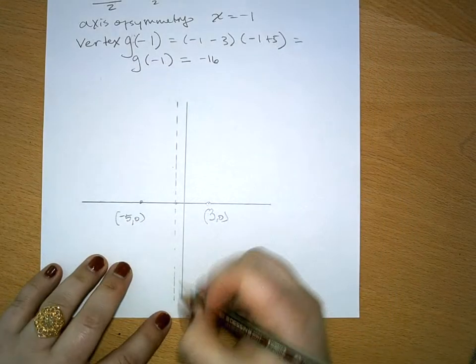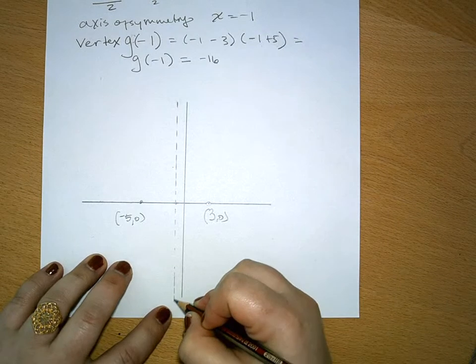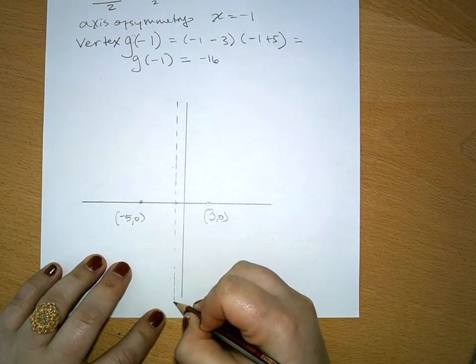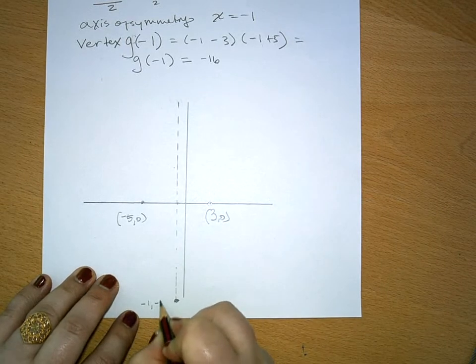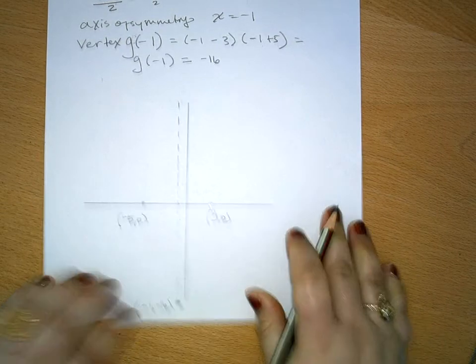So on the graph, this isn't going to be great scale, but I'm just going to put this down here. So then, negative 1, negative 16 is our vertex.